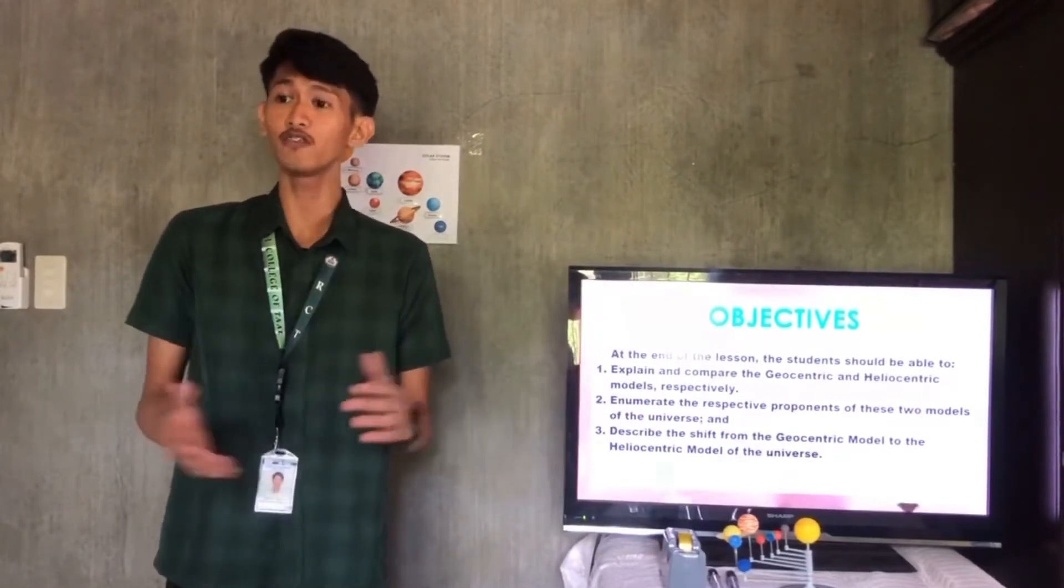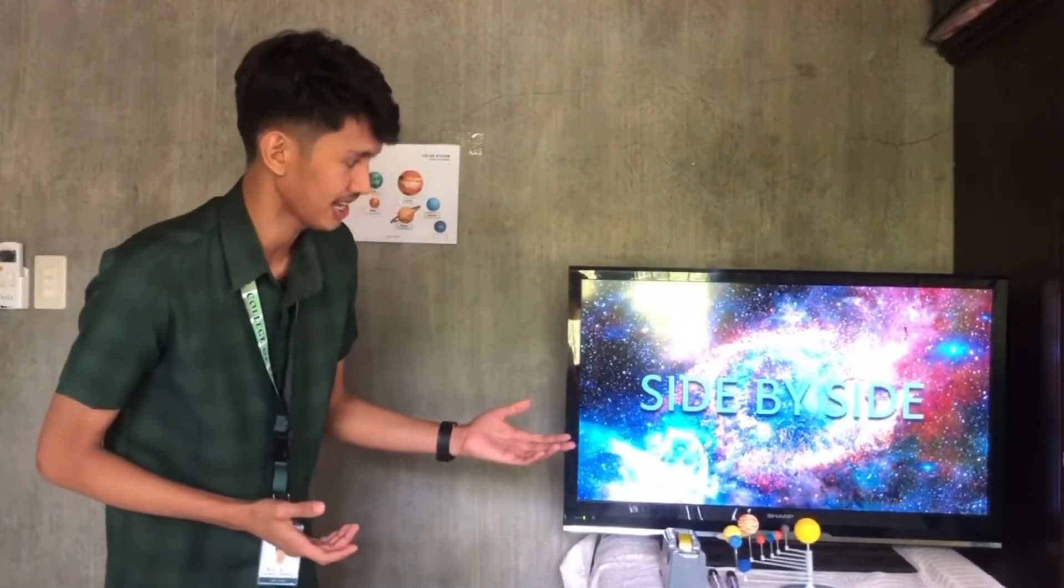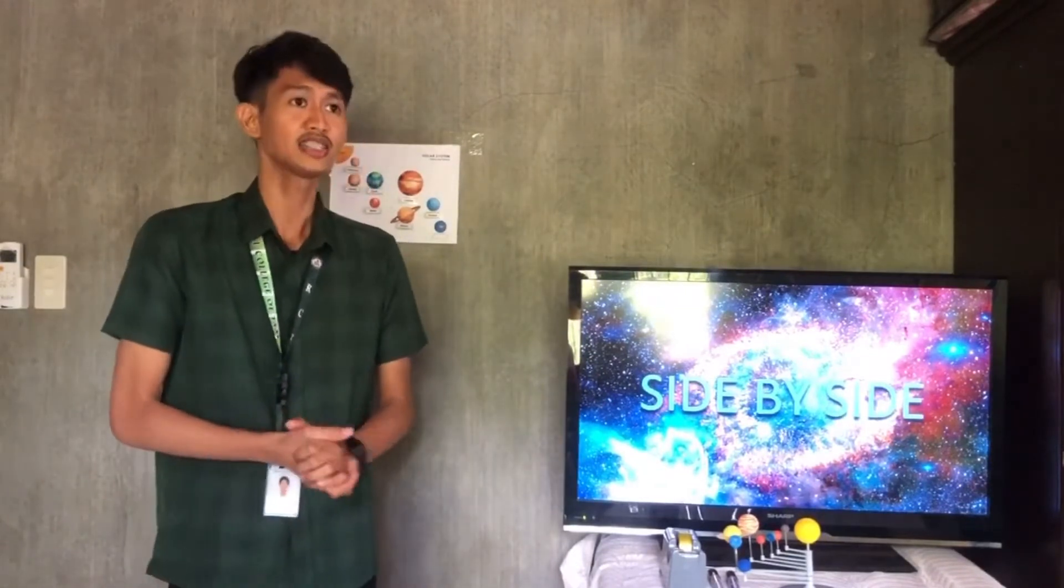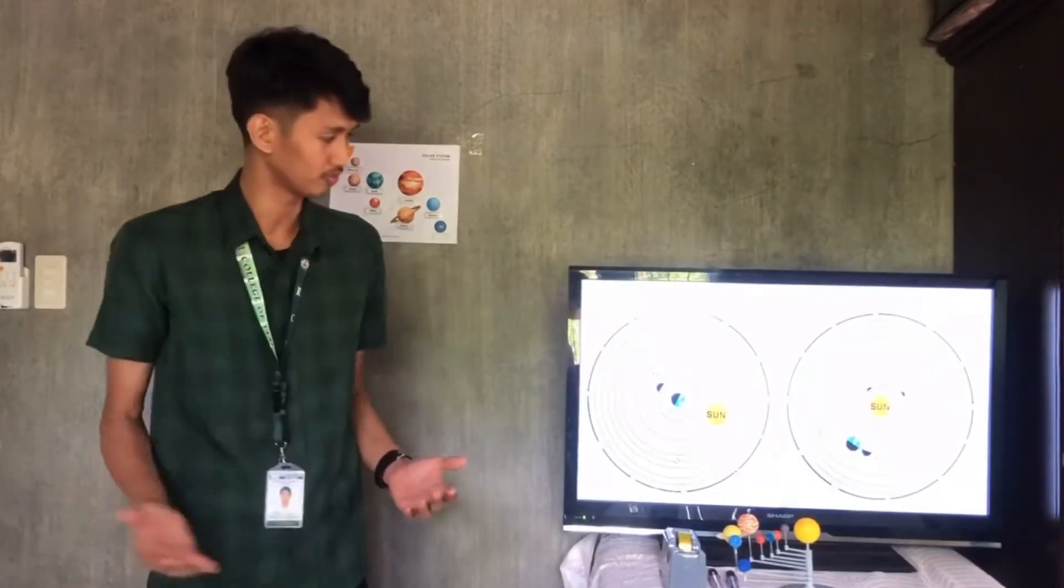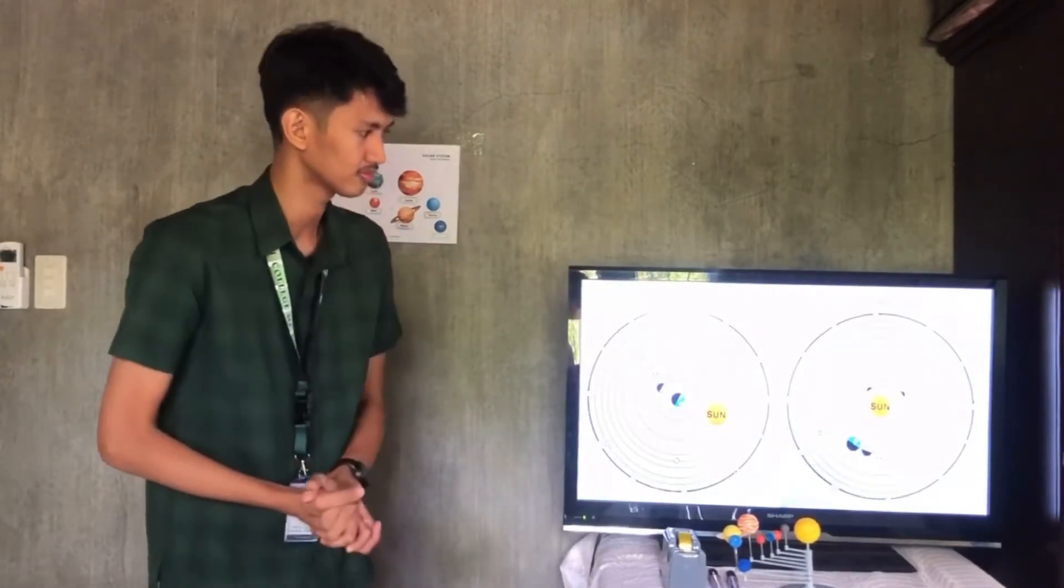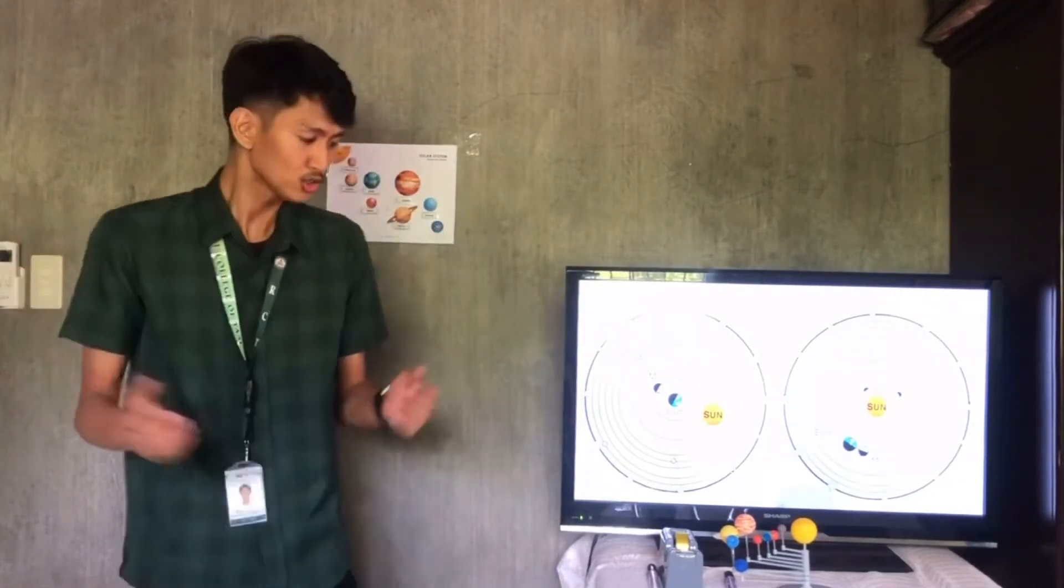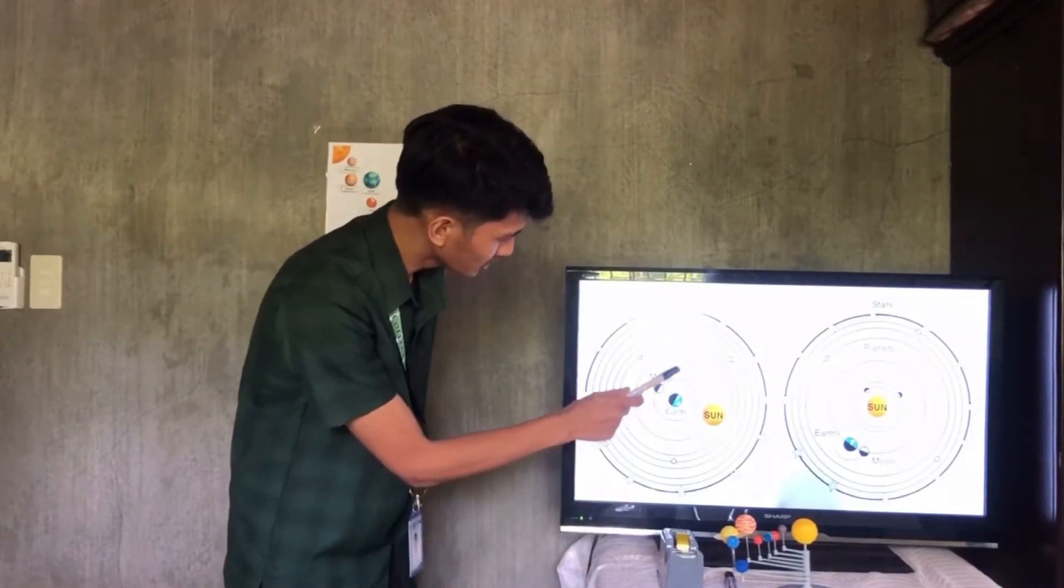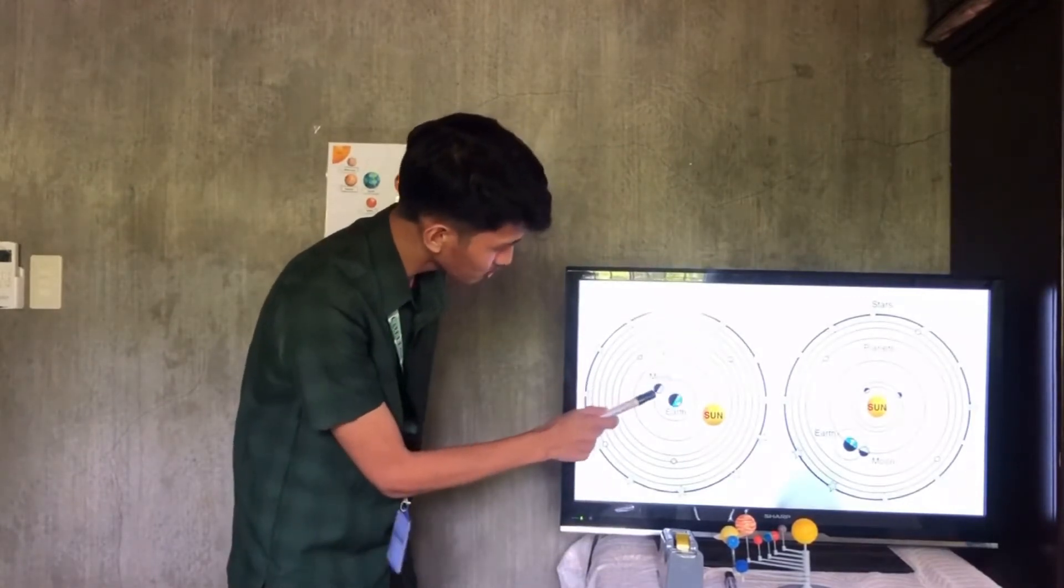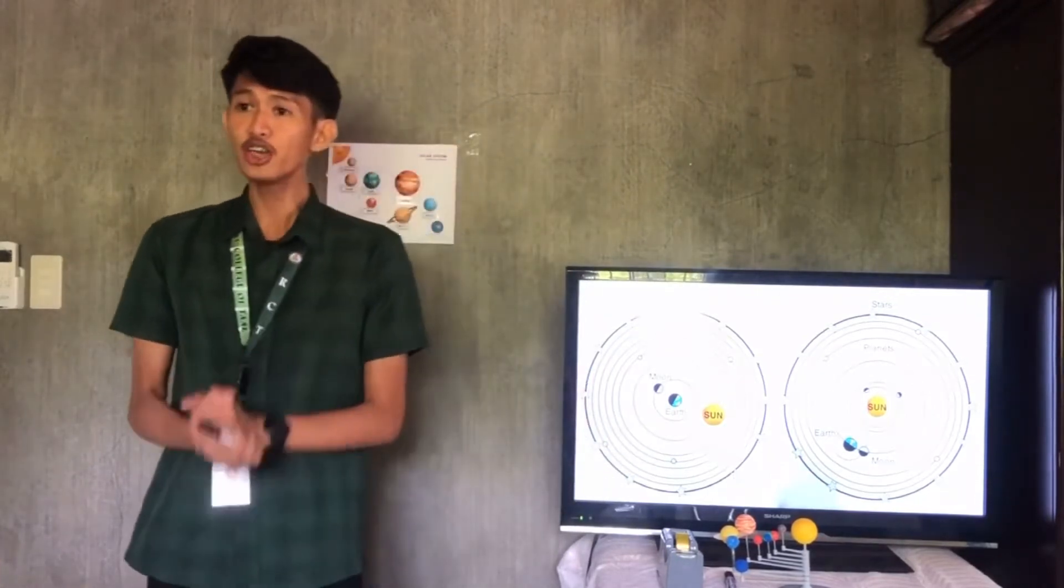Now, I have here an activity entitled, Side by Side. Let's examine and compare the two figures in the image. Class, what do you notice in the photo? Great observation, class. So, the model on the left has the earth in the center with the planets, the moon, and the sun circle around it. How about the figure on the right?